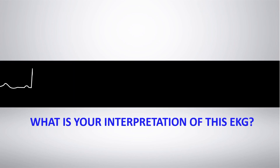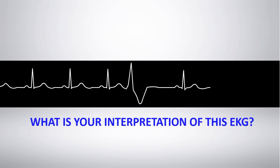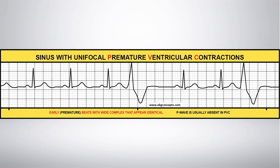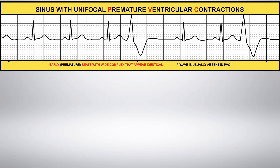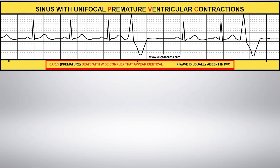What is your interpretation of this EKG rhythm strip? Sinus with unifocal premature ventricular contractions.